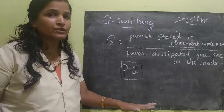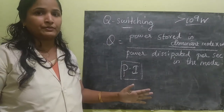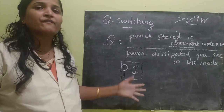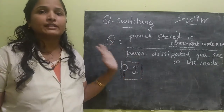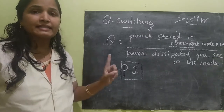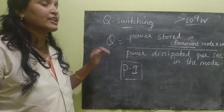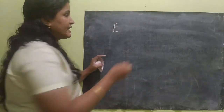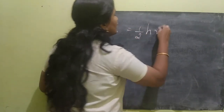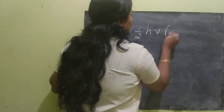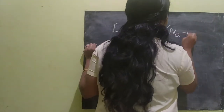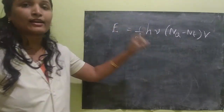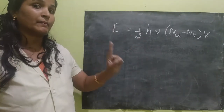Population inversion is a must for laser operation. For very high power, the population inversion should be very, very greater than the normal population inversion. This is the basic condition. The energy achieved in this Q-switching technique is denoted by E, equal to half H·μ, into (N_Q minus N_T) into B. Remember the energy will be very high.